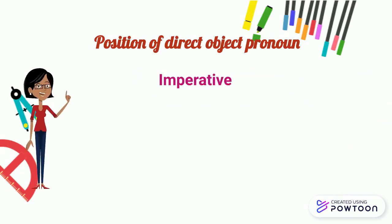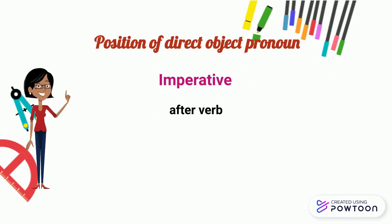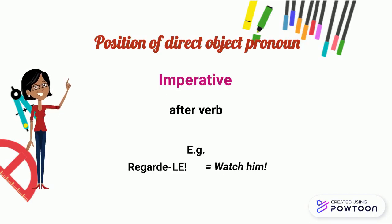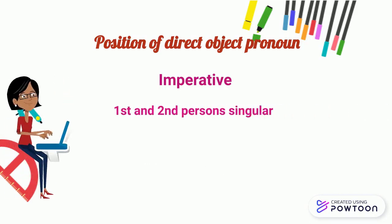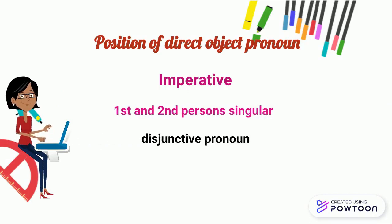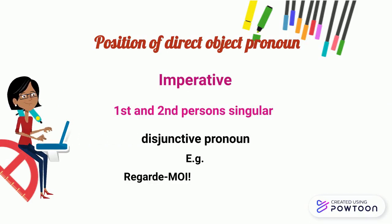At the imperative, the direct object pronoun is placed after the verb. For instance, regarde-le — watch him. And for the first and second person singular, we use the disjunctive pronoun. For instance, regarde-moi — watch me.